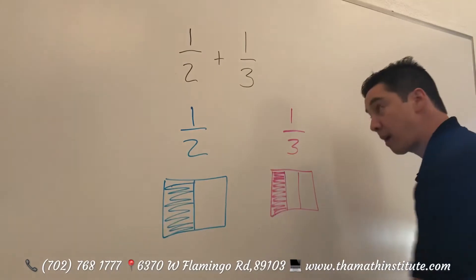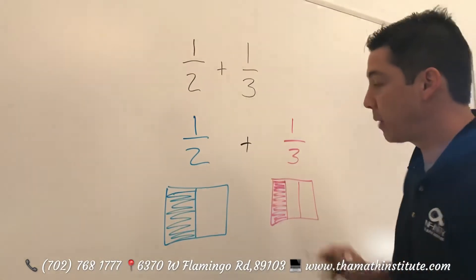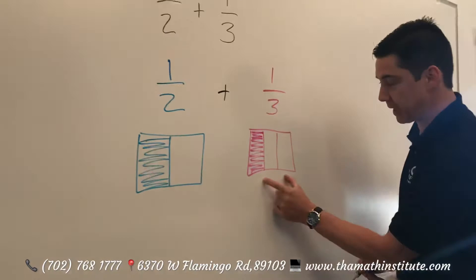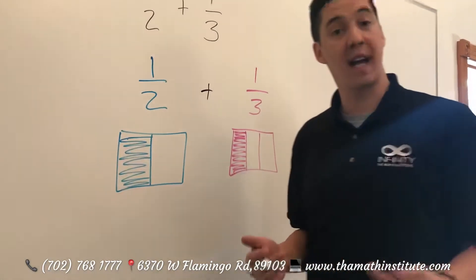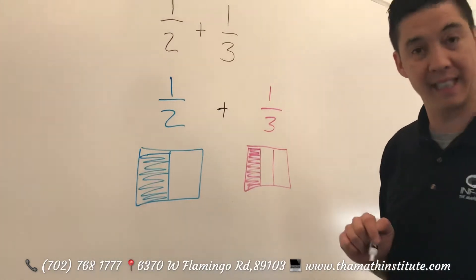Now if we're going to add these two pieces together, we can't just take this and throw it in here. How much is it? We don't know. So let's find a common denominator. The lowest common multiple would be six.